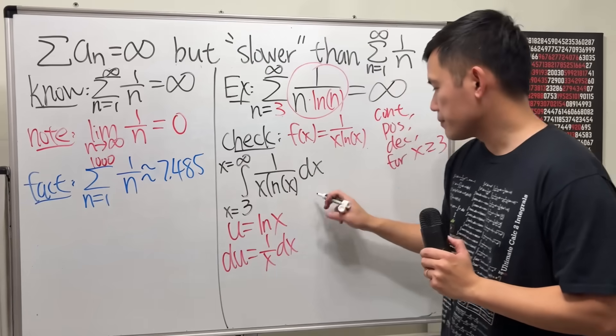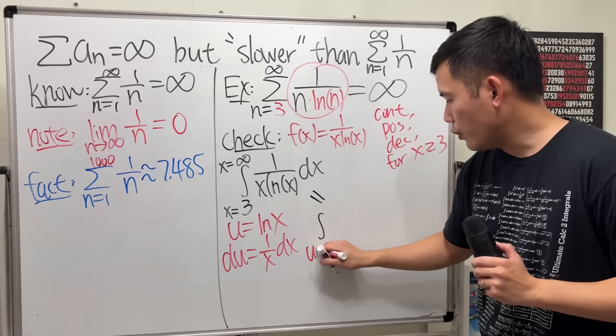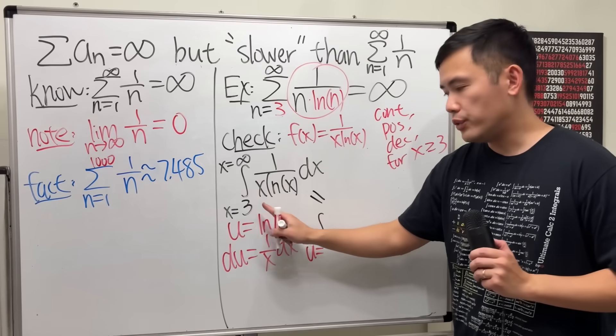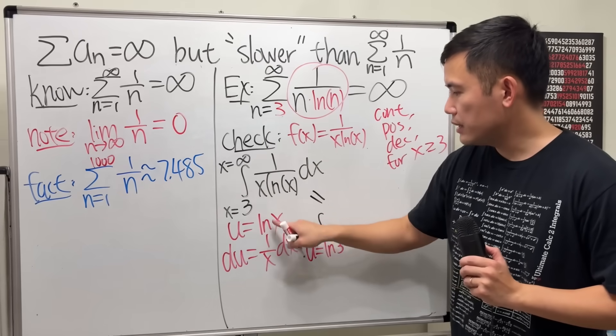It's 3 to infinity. So take this to the u world. We go from when x is 3, put it here, we have ln 3. Put infinity to here, ln infinity is still infinity, so u will still be infinity.